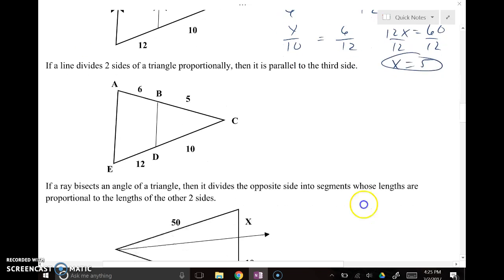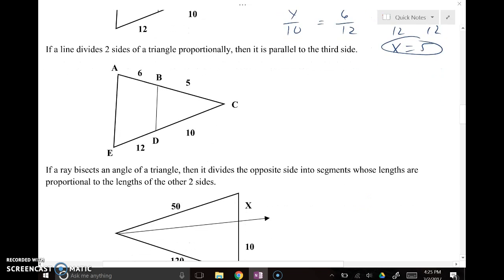Another pattern that we can notice is if a line divides two sides of a triangle proportionally, then it is parallel to the third side. So this is the converse of what we just did. So if 5 over 10 is equal to 6 over 12, which they are, then what we can be sure of is that these two sides have to be parallel.